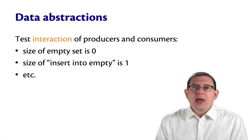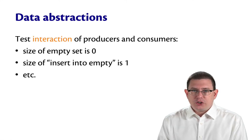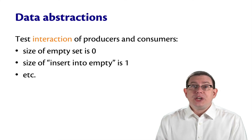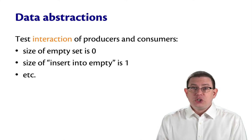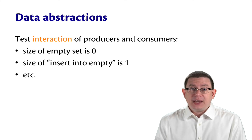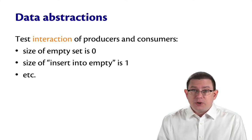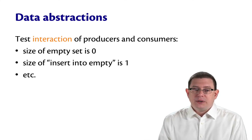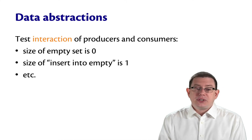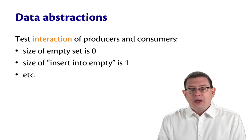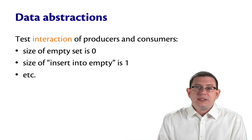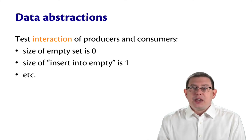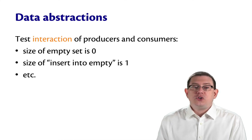So when inventing black box tests for data abstraction, test all the possible interactions of producers and consumers. Take the Cartesian product of them together and create a black box test for each element in that product. You could test, for example, that the size of the empty set is zero and that the size of inserting into empty is one. That tests the application of that consumer size to two different producers, empty and insert.